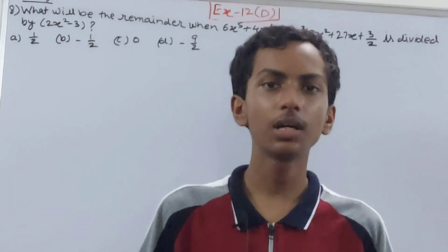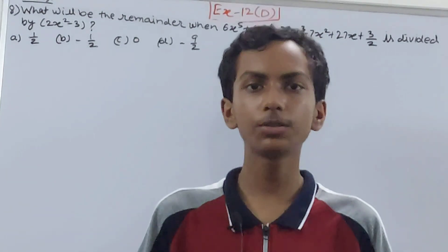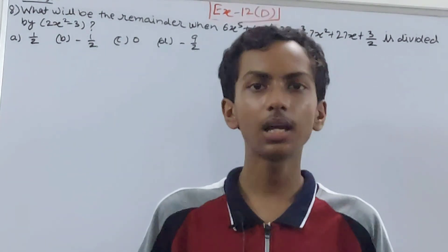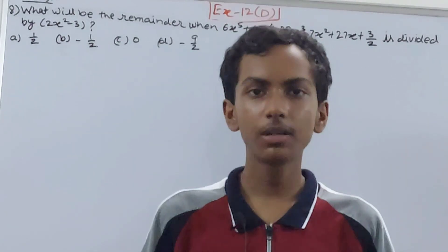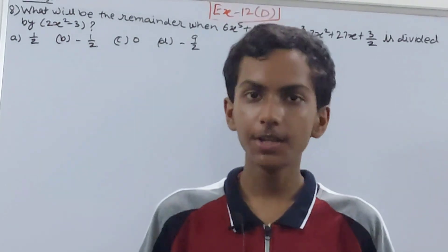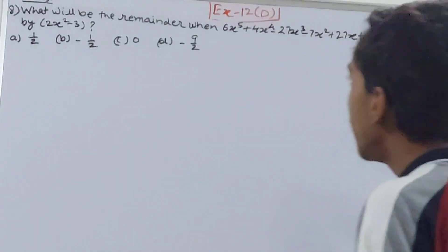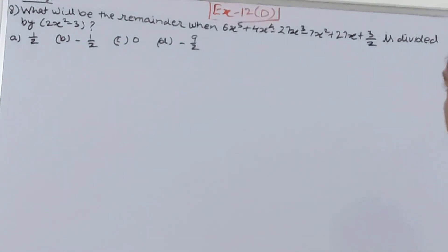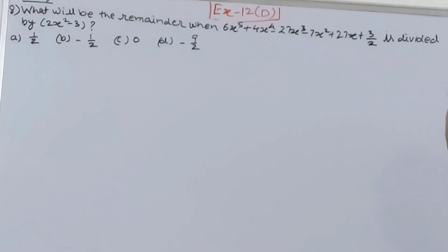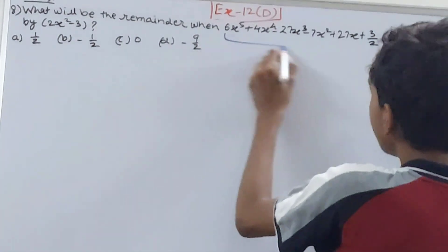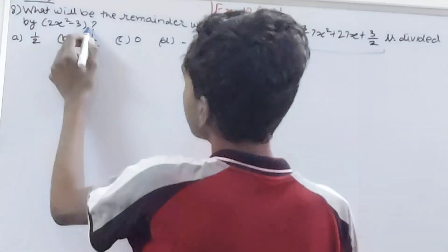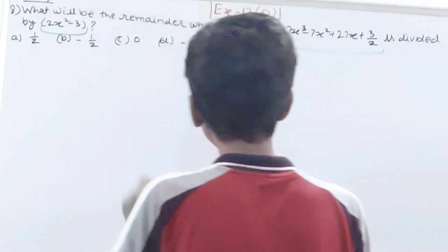Hello friends, welcome back to my YouTube channel Unlock Your Learning. In this video we are going to solve ICSE Mathematics Class 8, Chapter 12, Fundamental Concepts, Exercise 12D, Question Number 8: What will be the remainder when 6x to the power 5 plus 4x to the power 4 minus 27x cubed minus 7x squared plus 27x plus 3/2 is divided by 2x squared minus 3? So basically we have to divide this expression by this expression.